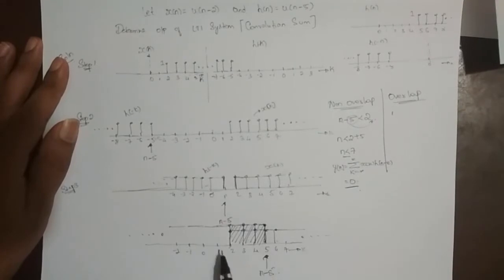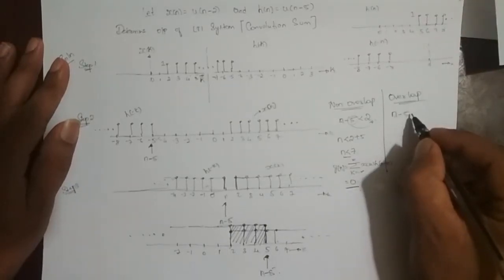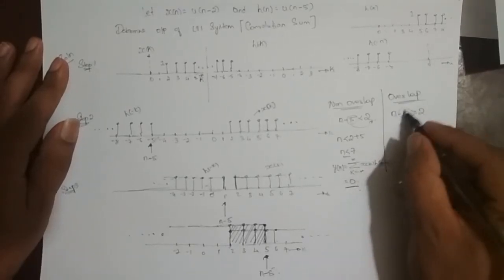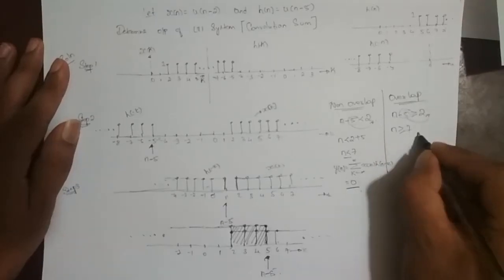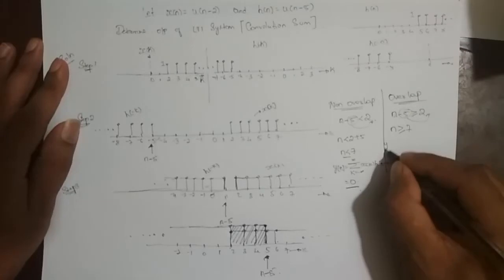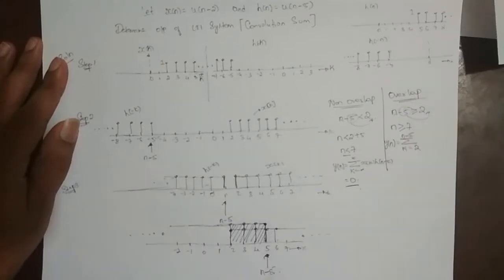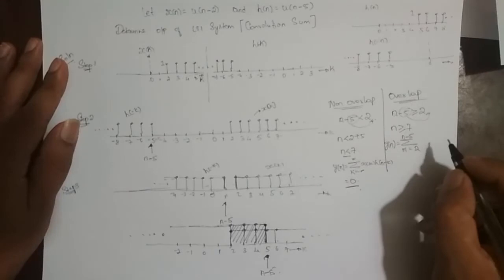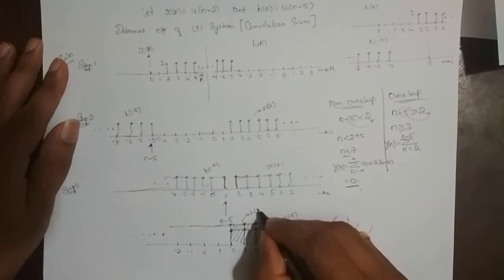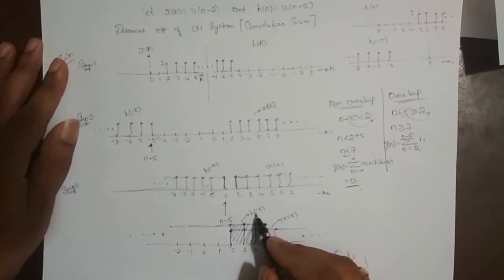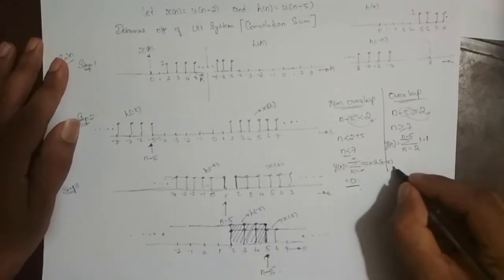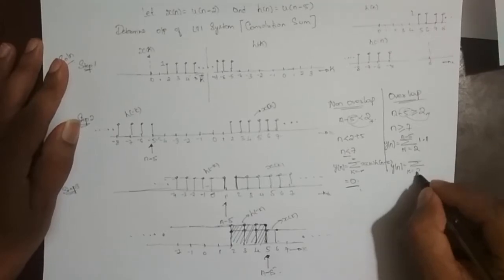Overlap region: overlap starts when n - 5 ≥ 2, that is n ≥ 7. So y(n) = summation from k = 2 to n - 5 of x(k)·h(n-k). The amplitude of x(k) is 1 (unit step) and h(-k) is also 1 (unit step), so y(n) = summation from k = 2 to n - 5 of 1.